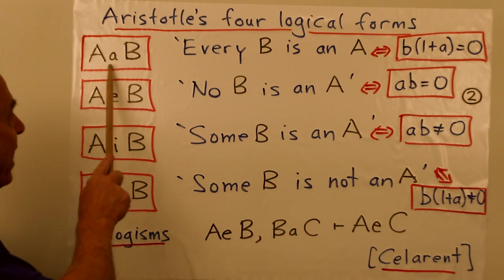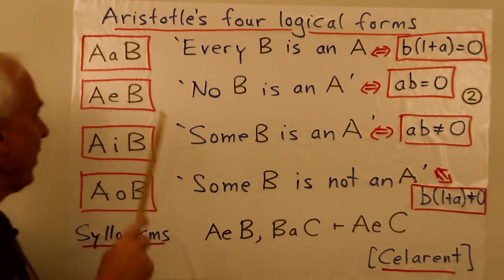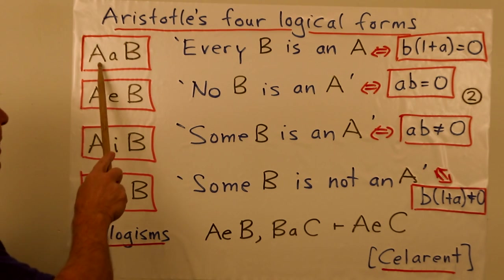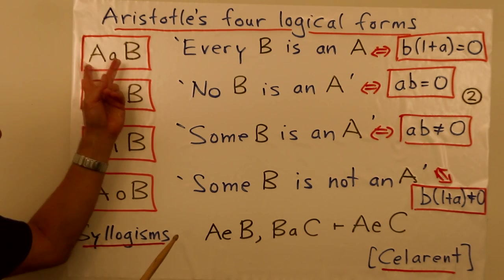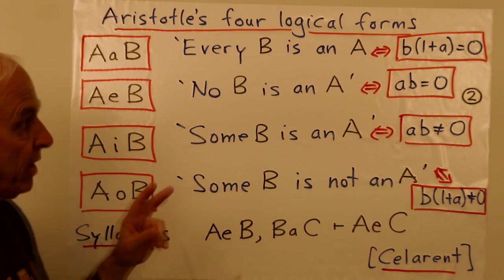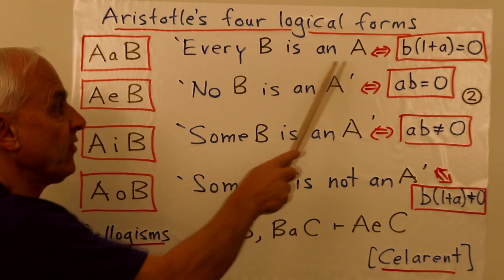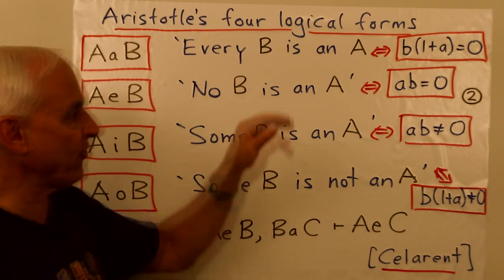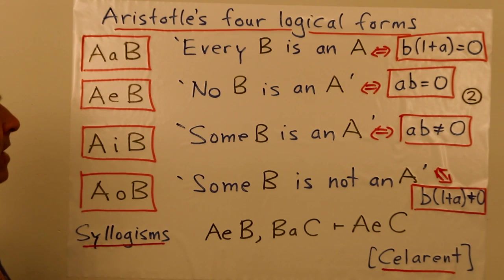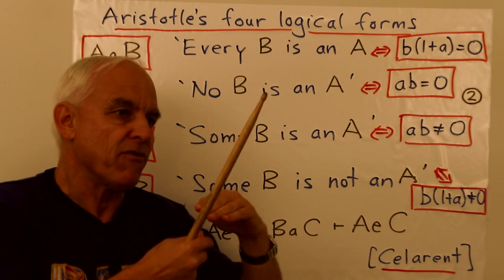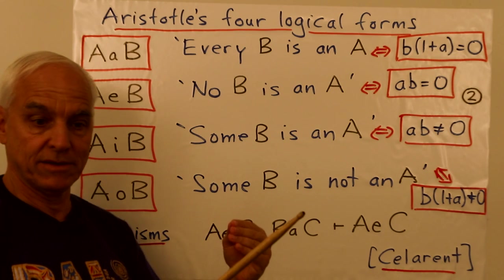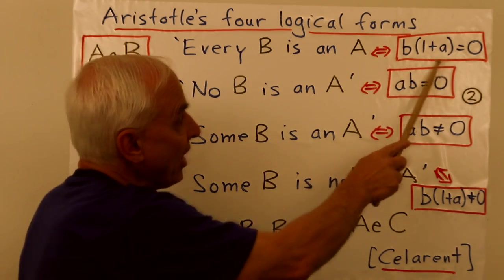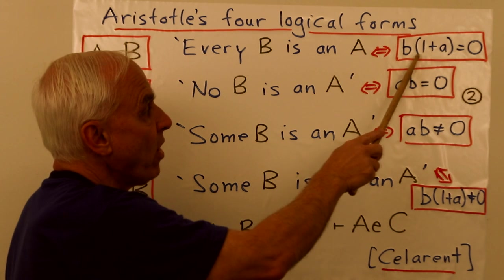And they are indicated by these little vowels, A, E, I, and O. So let me remind you about basically how we started this little course. A little a B, so referencing two propositions capital A and capital B, this is a short form for every B is an A. That's not exactly the way Aristotle would have said it, but that's sort of a modern interpretation of what he's talking about. And in terms of vectors in a Boole algebra that represent these properties or propositions A and B, we could rewrite this in this algebraic form, that it's B times one plus A equals zero.